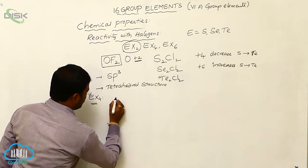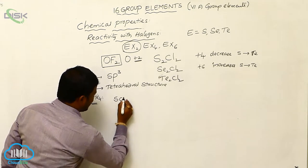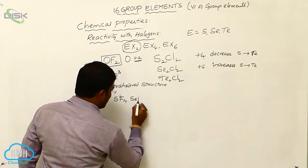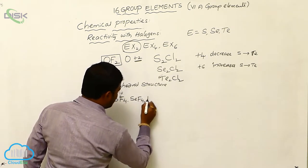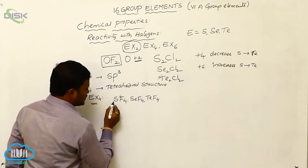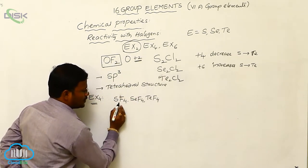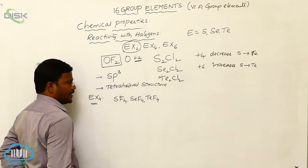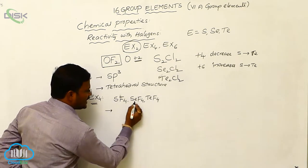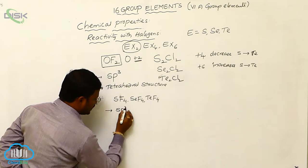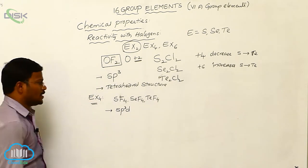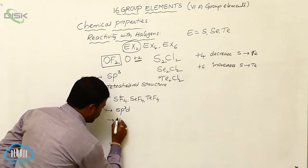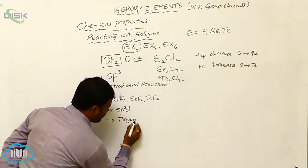Sulfur reacting with fluorine produces SF4, and similarly SeF4 and TeF4 — sulfur tetrafluoride, selenium tetrafluoride, and tellurium tetrafluoride — in which sulfur, selenium, and tellurium exhibit SP3D hybridization. Due to SP3D hybridization, they show trigonal bipyramidal geometry.